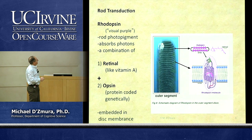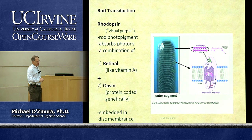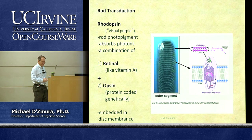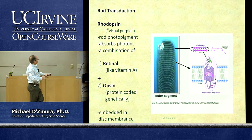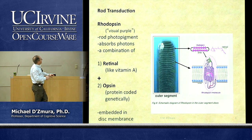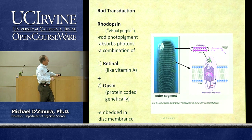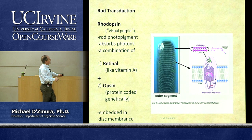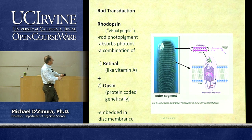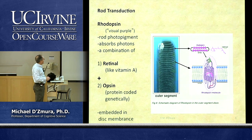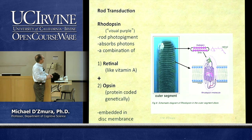Rhodopsin translates to 'visual purple.' It is a photopigment that is good at absorbing photons in the range of visible light wavelengths, 400 through 700 nanometers. It combines retinal, which is a smaller molecule like vitamin A, and opsin, a genetically coded protein. Those two things together make rhodopsin.